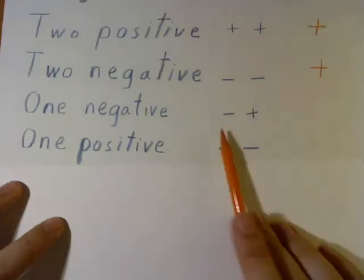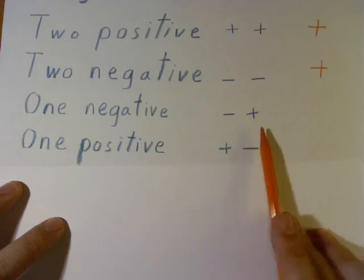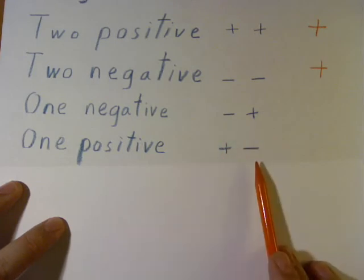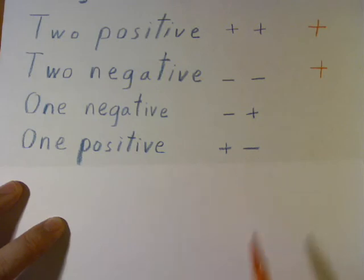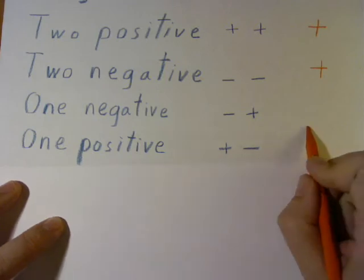However, if you have one negative and one positive, or a positive and a negative, when you multiply, when you divide, or when you have a fraction, that gives you a negative number.